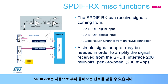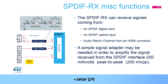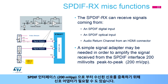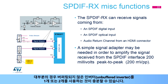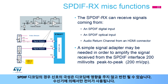The SPDIFRX can receive signals from an SPDIF digital input, an SPDIF optical input, and an audio return channel from an HDMI connector. A signal adapter may be needed to amplify the signal received from the SPDIF interface (200 mVPP). Using one or two unbuffered inverters can be sufficient in most cases. Note that for SPDIF encoding, the signal polarity can be inverted without affecting the decoding, as only the transitions are used by the receiver.